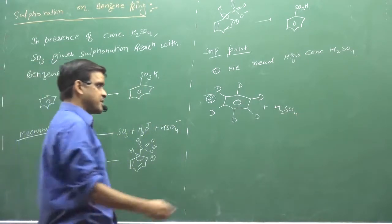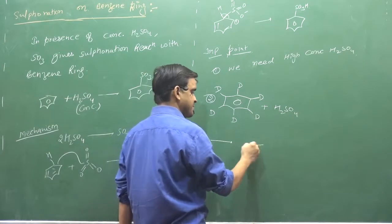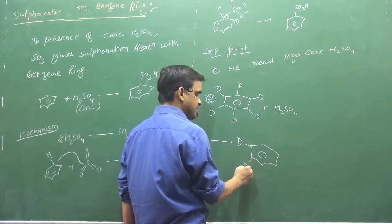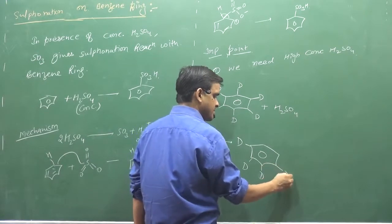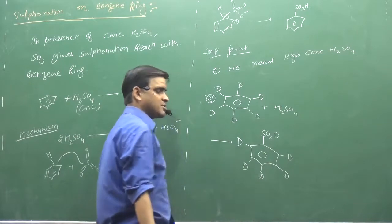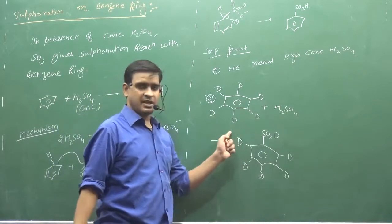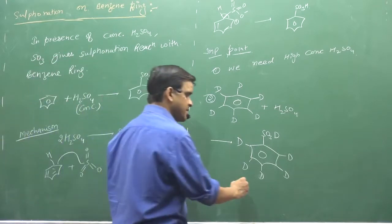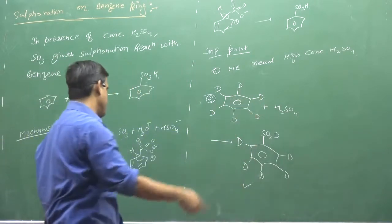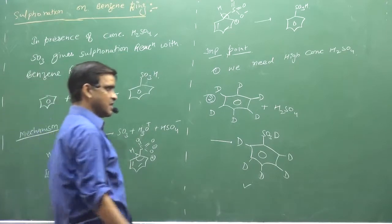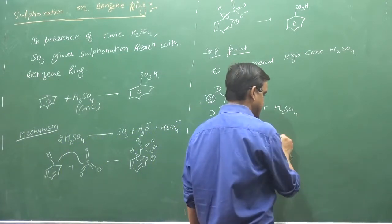So tell us what will become product in this. You can have two things. Deuterium. So you can think of H2SO3D and you can think of D2SO4.